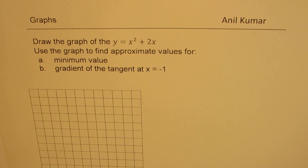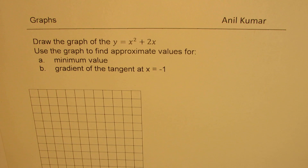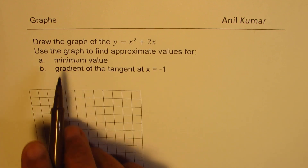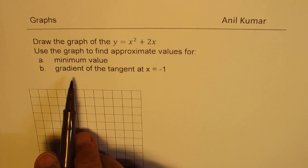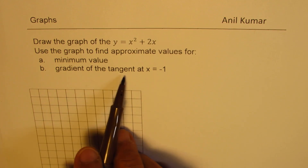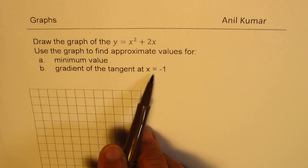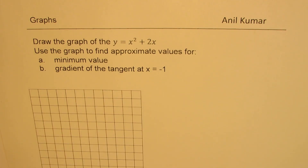I'm Anil Kumar. Welcome to my series on graphs. The question here is: draw the graph of y equals x squared plus 2x. Use the graph to find the approximate value for the minimum value, and the gradient of the tangent at x equals minus 1.